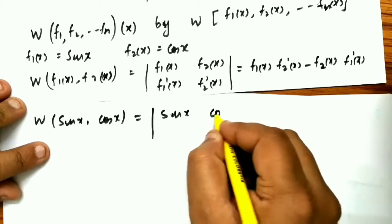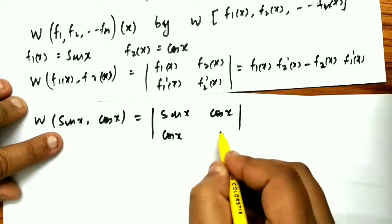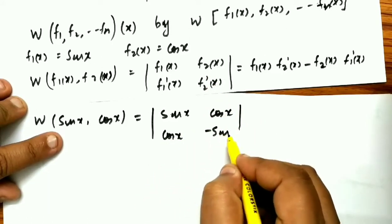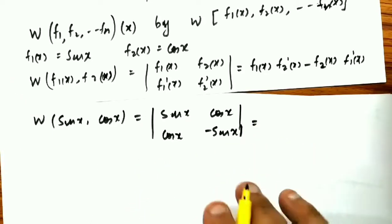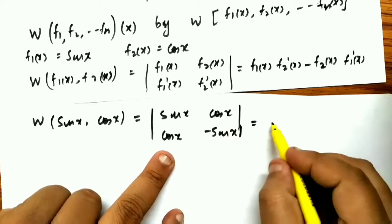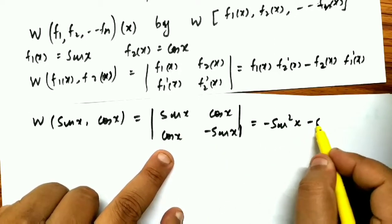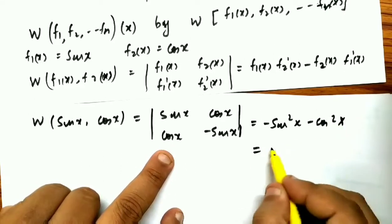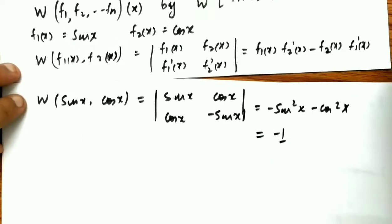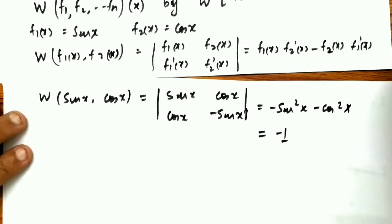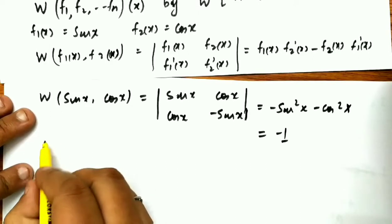Substituting: F1(x) = sin x, F2(x) = cos x, F1'(x) = cos x, and F2'(x) = −sin x. So the Wronskian is sin x·(−sin x) − cos x·cos x = −sin²x − cos²x = −(sin²x + cos²x) = −1. So the Wronskian for sin x and cos x is −1.